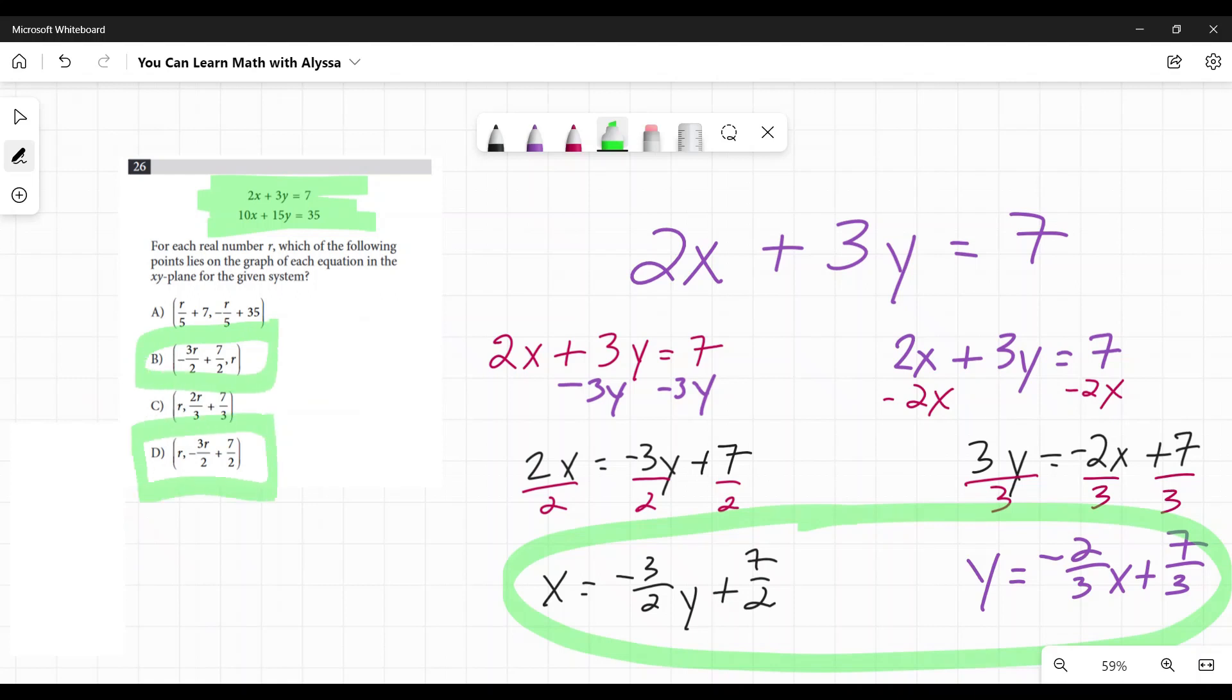And what are these actually saying? They're saying, if I have a number, any number r. This one is saying if my y value is r, then my x value would be negative 3r over 2 plus 7 over 2. Look at this equation right here. This is saying that for every value of y, x is equal to negative 3 halves times the y plus 7 halves.